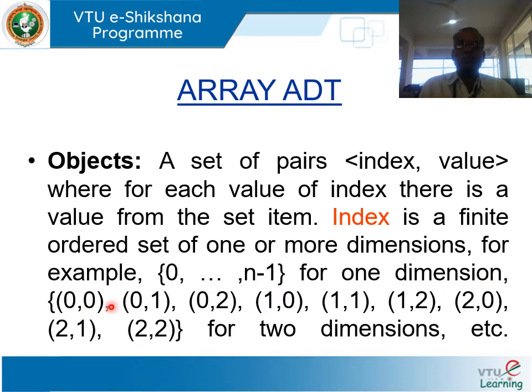For two dimensions, the index pairs are: (0,0), (0,1), (0,2), (1,0), (1,1), (1,2), (2,0), (2,1), (2,2).